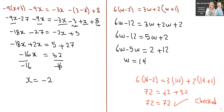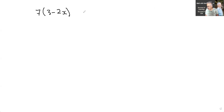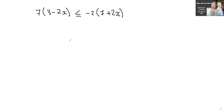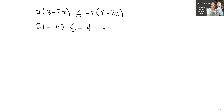I'm going to do one more question involving inequalities with algebra. So: 7 brackets 3 minus 2x is less than or equal to negative 2 times 7 plus 2x. They want you to solve this inequality and then graph it on a number line. You treat this as if it were an equal sign. Using the distributive property: 7 times 3 is 21, minus 14x is less than or equal to negative 14 minus 4x.